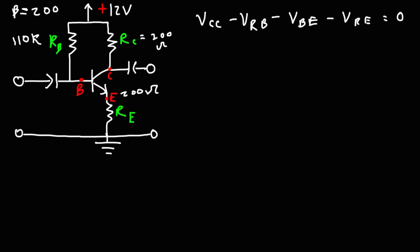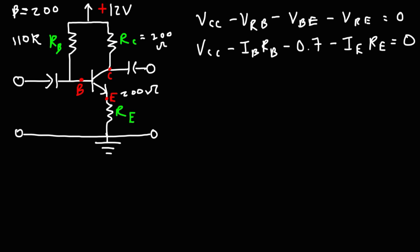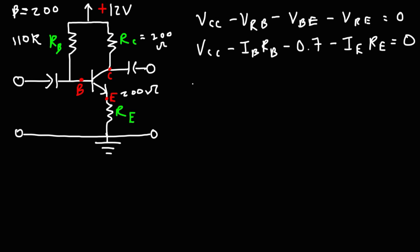All of those should equal zero. The voltage across the base resistor RB is IB times RB. VBE is set to 0.7, and VRE equals the emitter current times the emitter resistor. Moving these two terms to the other side, we get VCC minus 0.7 equals IB times RB plus IE times RE.